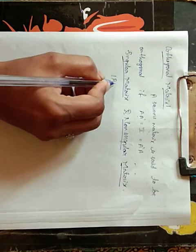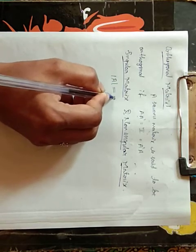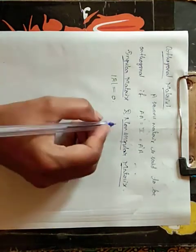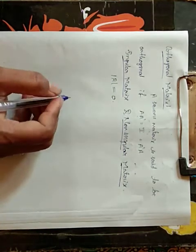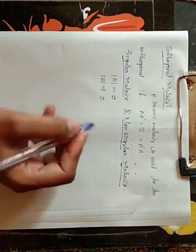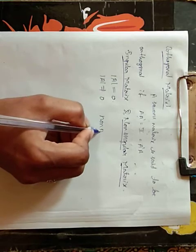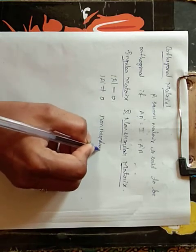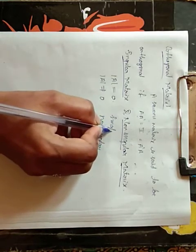Singular matrix: suppose A is a square matrix. If the determinant of A is equal to 0, then it is a singular matrix. If the determinant of A is not equal to 0, then it is a non-singular matrix.